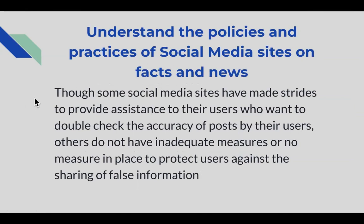It's important to understand the policies and practices of social media sites on facts and news. Some social media sites have made strides to assist users who want to double-check the accuracy of posts. For example, Instagram links a resource whenever people make posts about COVID-19 that takes you to a specific site providing valid information such as government websites. However, other social media sites do not have these measures in place, so it's important to realize there may be no regulations preventing false information from being shared.